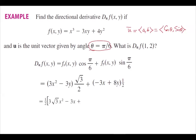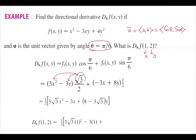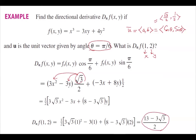The partial derivative of f with respect to y is −3x + 8y, and sine(π/6) is 1/2. Distributing and combining, we get (1/2)[√3(3x² − 3y)] plus (−3x + 8y). Substituting x = 1 and y = 2, the directional derivative at that point is (13 − 3√3) / 2. This is the rate of change of the function in the direction of this vector u = (√3/2, 1/2).